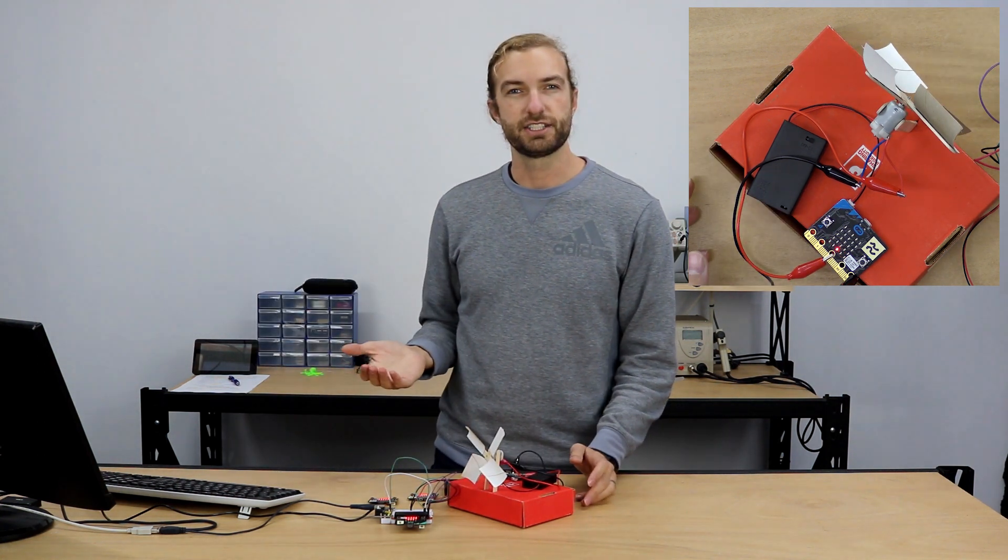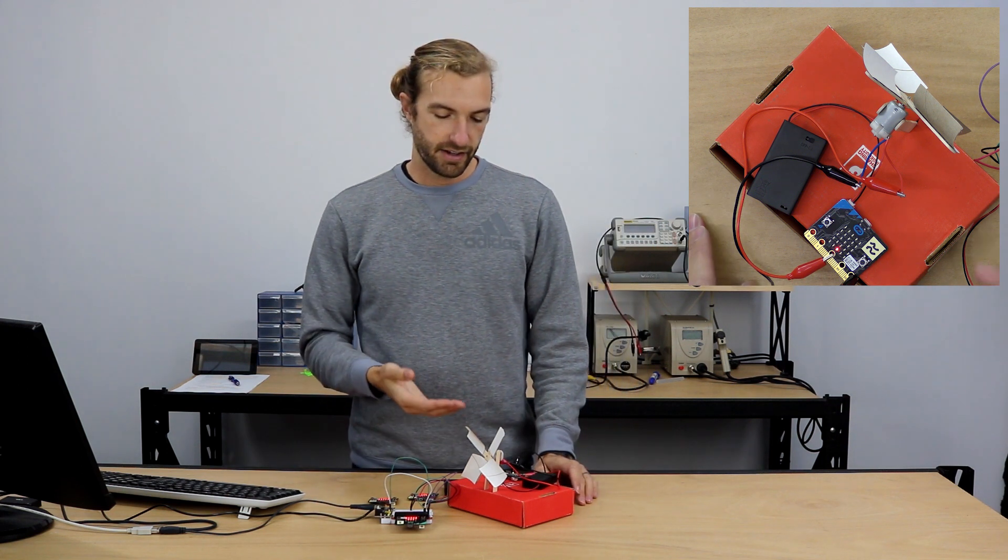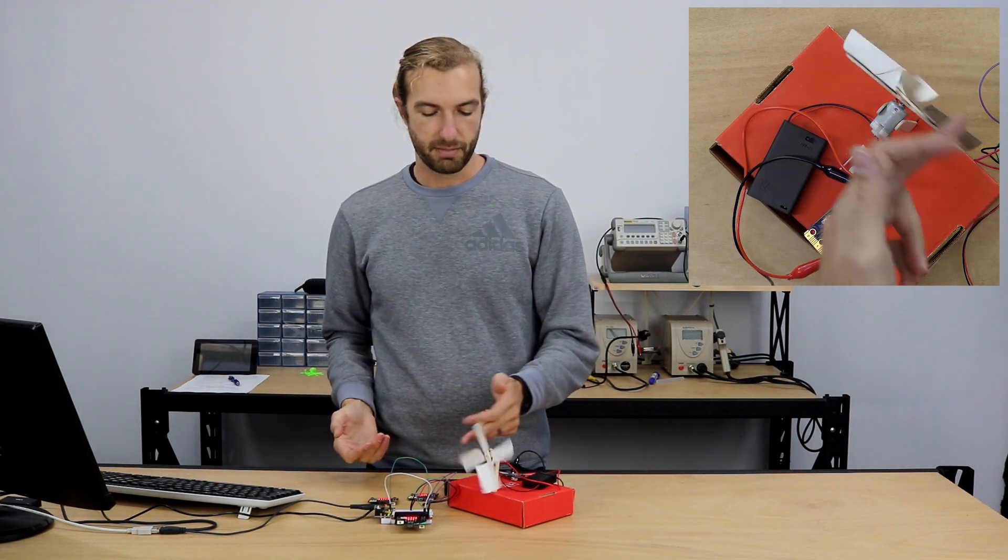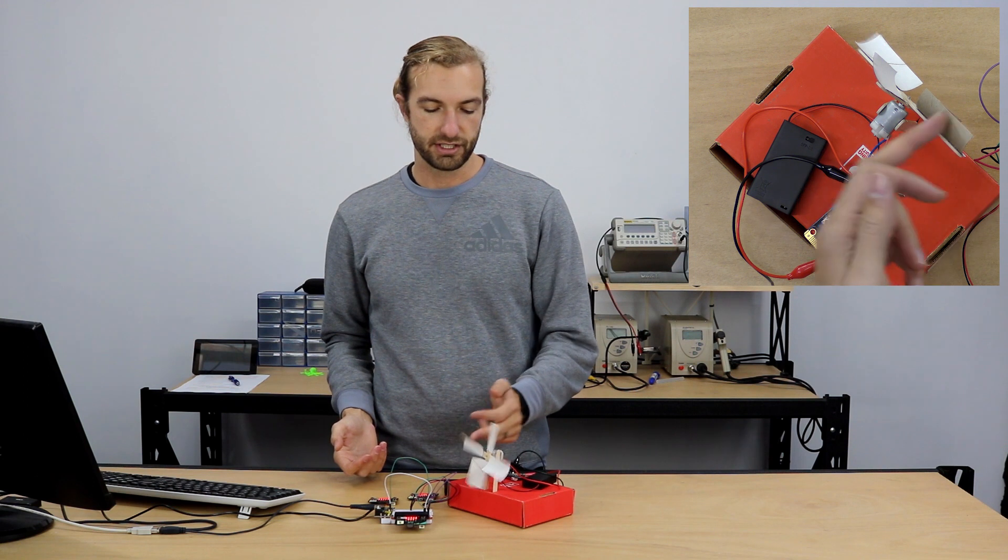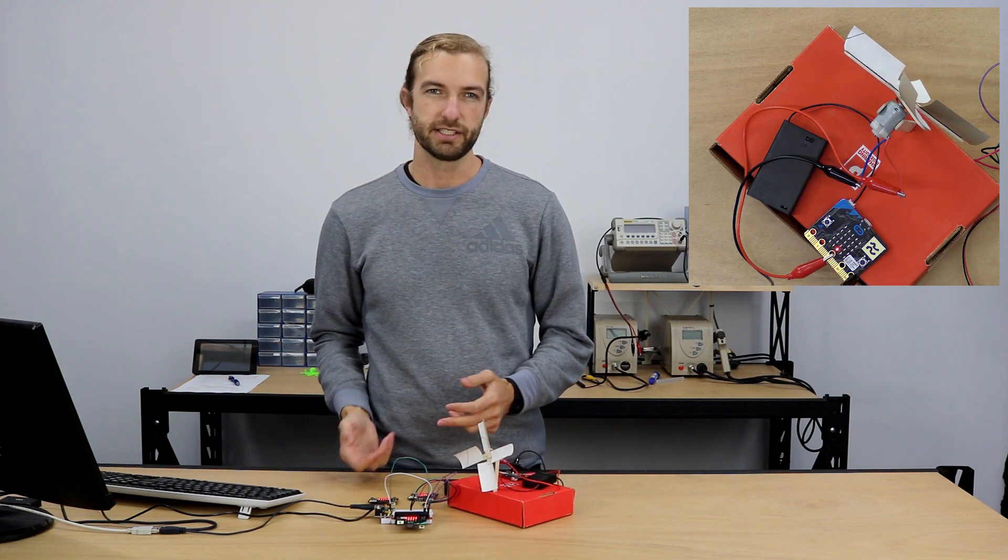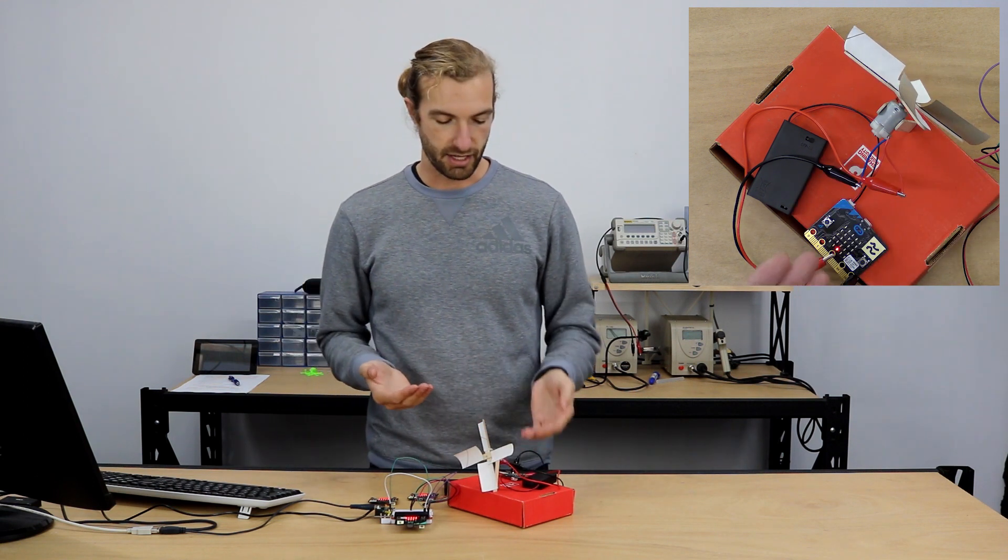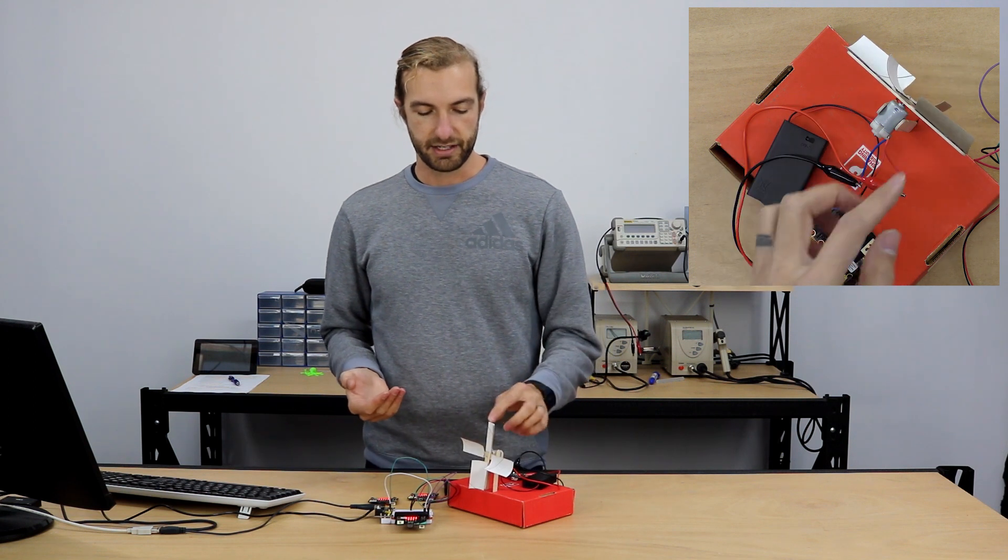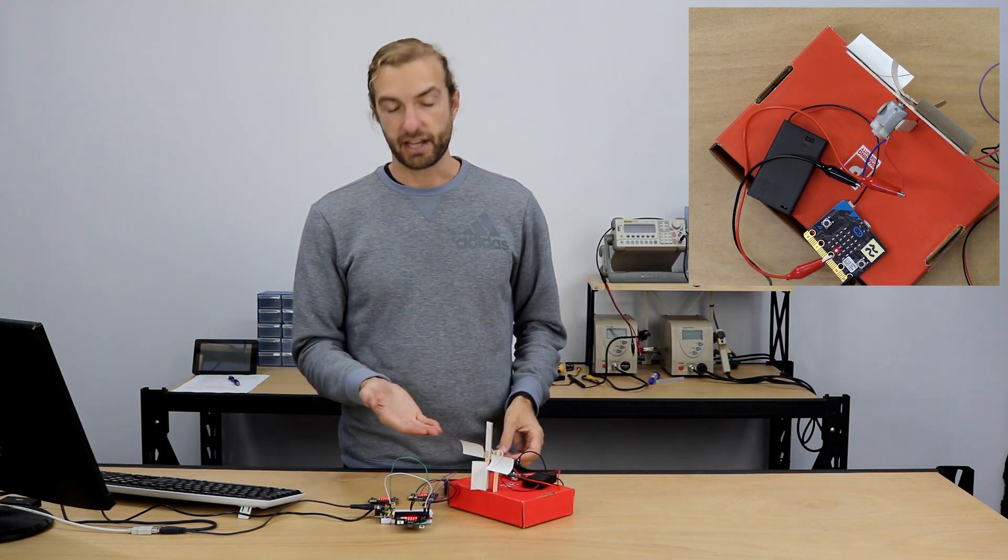Now there's some obvious disadvantages to this kind of design. If you spin the motor the other direction, so the motor is spinning counterclockwise, then it doesn't generate any voltage that you can measure and it's not calibrated.